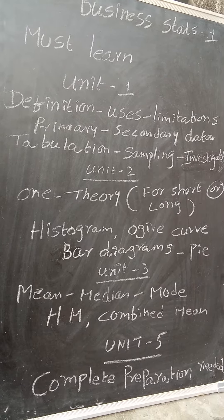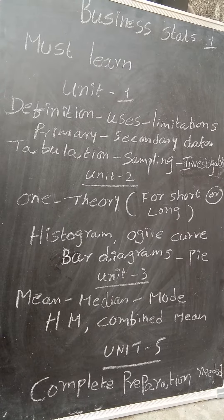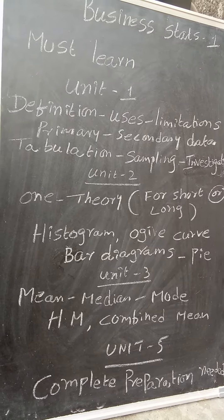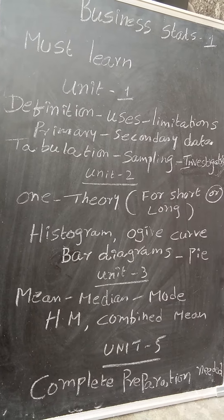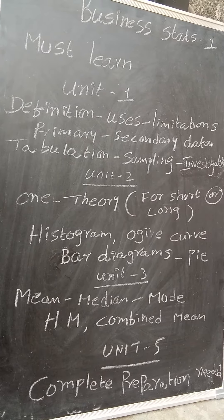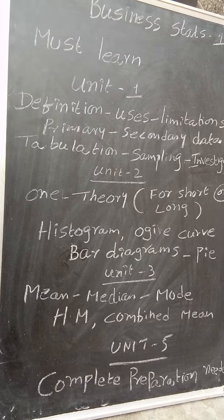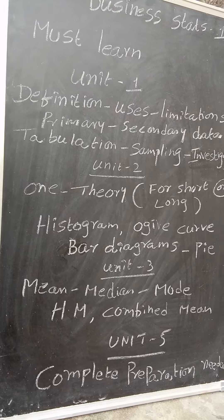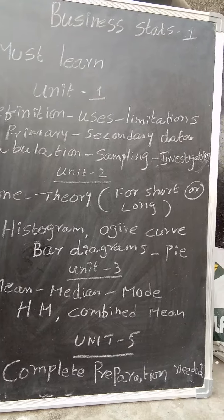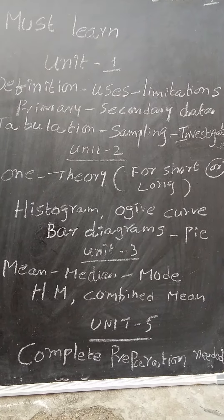Then my dear students, in unit number 3, you are perfect in mean, I know, direct method, indirect method, shortcut method. Then learning of median is also important, mode, grouping analysis table, even harmonic mean is also important. Combined mean, combined mean means x bar 1,2, x bar 1,2 is equal to n1 x bar 1 plus n2 x bar 2 by n1 plus n2. And unit number 5...